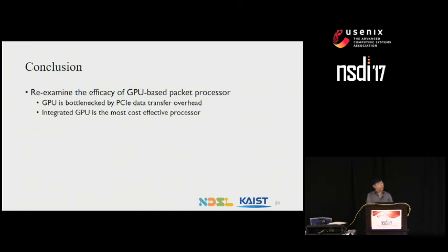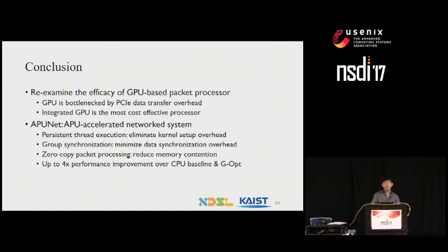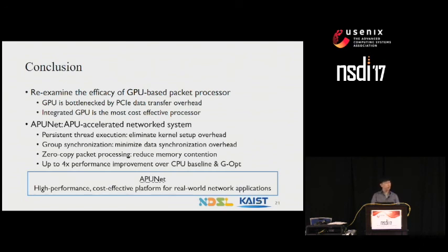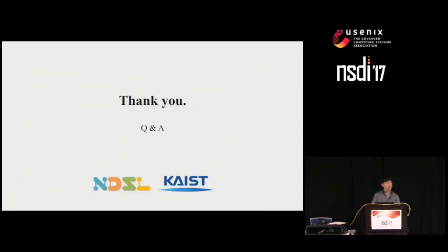In conclusion, we reexamined the efficacy of GPU-based packet processing. Through cost-efficiency analysis, we showed that discrete GPU's capacity is bottlenecked by PCIe data transfer overhead, and removing it makes integrated GPU the most cost-effective processor. We presented APUNet, an APU-accelerated network system that addresses integrated GPU challenges with persistent thread execution, group synchronization, and zero-copy packet processing. Evaluation shows APUNet outperforms CPU approaches by up to four times, and we believe APUNet will serve as a high-performance, cost-effective platform for real-world network applications.